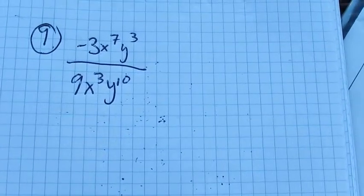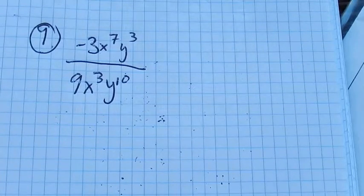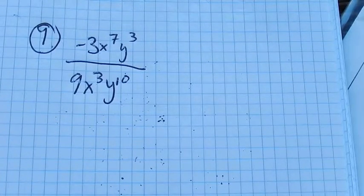This is Math 98, practice test 2, problem number 9. We are supposed to simplify and write the answers with positive exponents only.